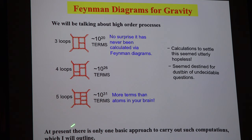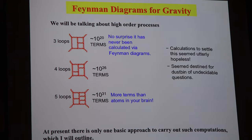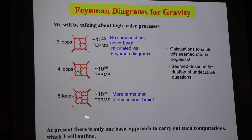You can do some amusing counting: if you count the number of terms in each vertex and each propagator, then multiply it out the way you would in a Feynman diagram calculation, you get completely ridiculous numbers. At three loops you'd encounter Feynman diagrams with 10 to the 20th terms — obviously you can't do such calculations with any computer. At five loops you get 10 to the 31 terms, which is more terms than there are atoms in your brain. But in fact we now do these types of calculations routinely — I didn't say easily, I said routinely.